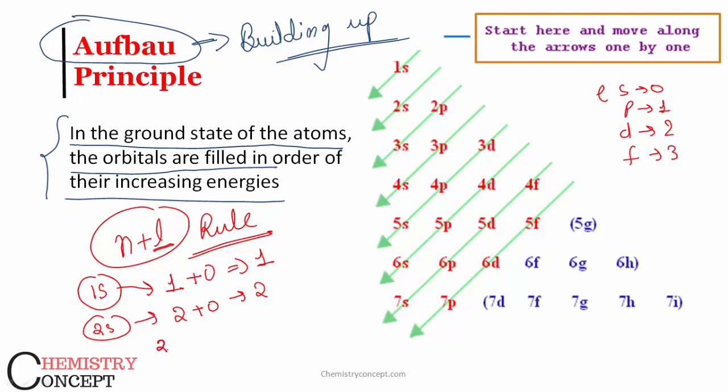Similarly, we talk about 2p, it is two plus one, that is three. So this is the sequence. What about 3s orbital? It is again three plus zero, that is three.